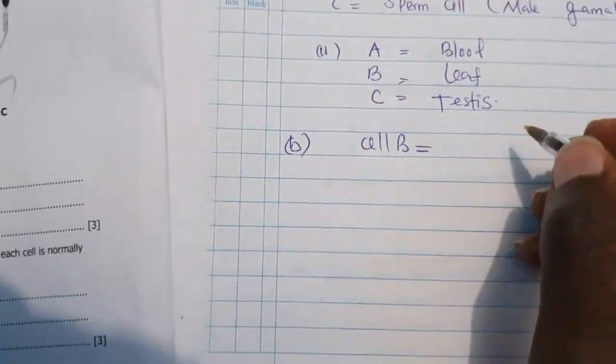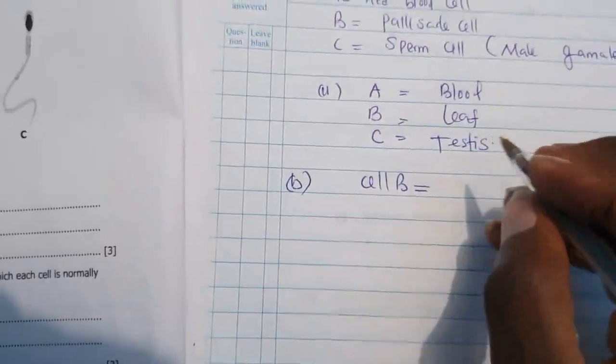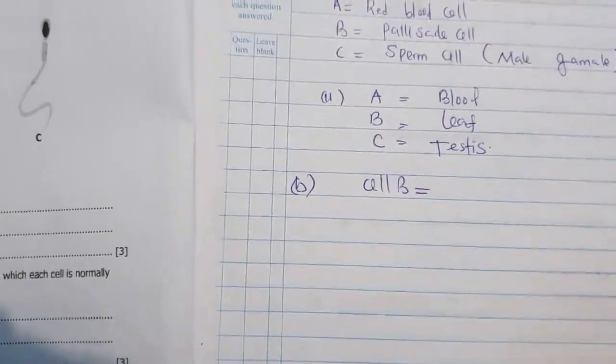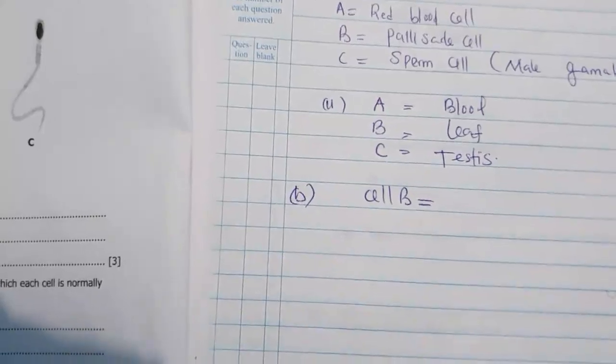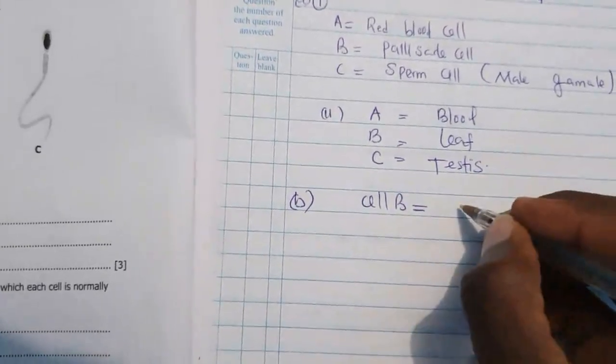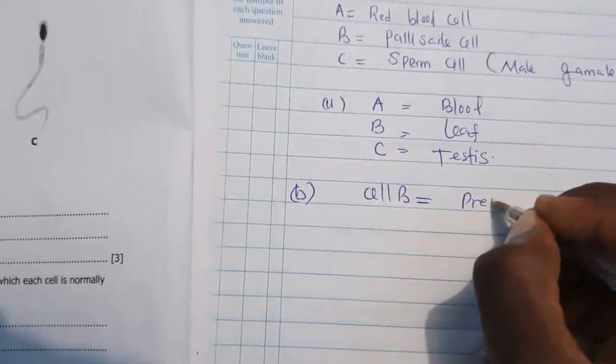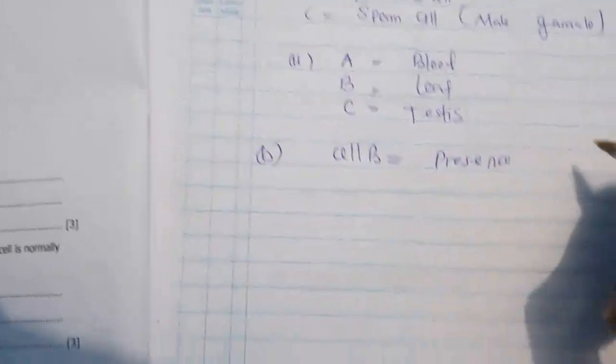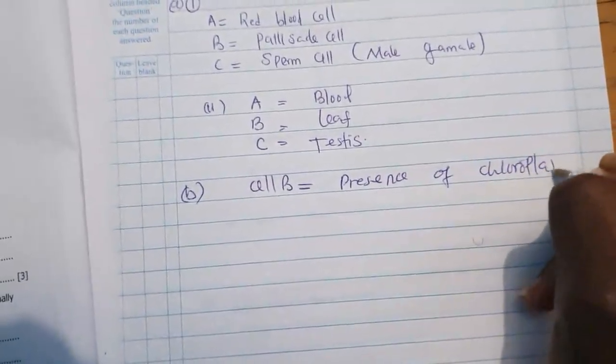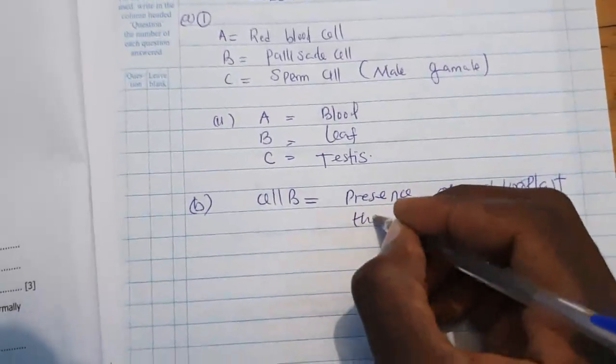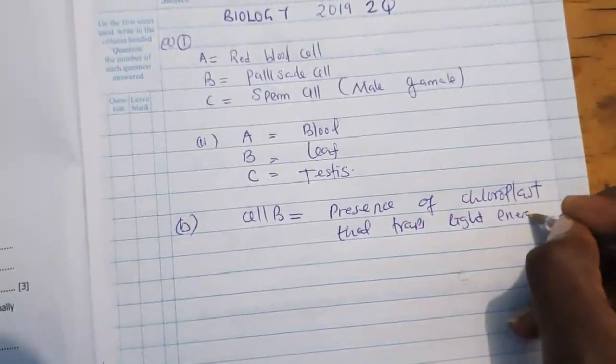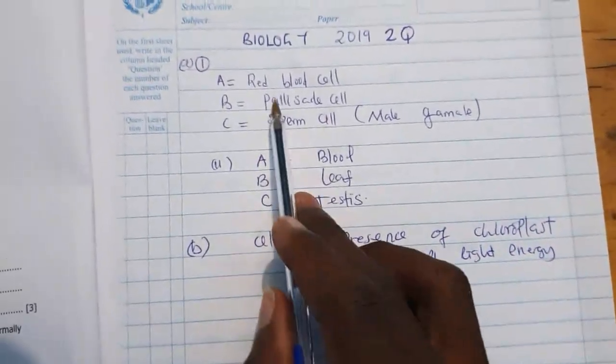So for cell B, cell B which is a, which is a, the palisade cell, so cell B which is the palisade cell is that it performs its function due to the presence of what do we see? Presence of, so presence of chloroplast.